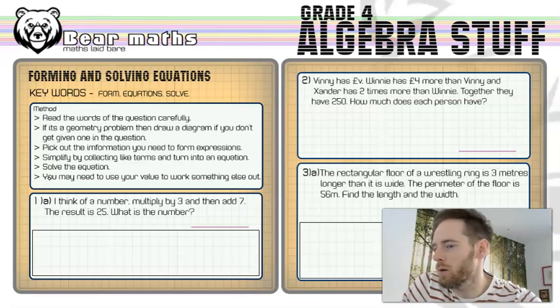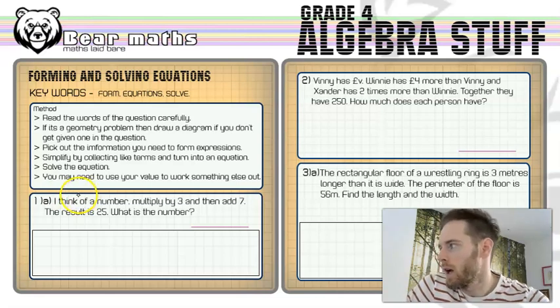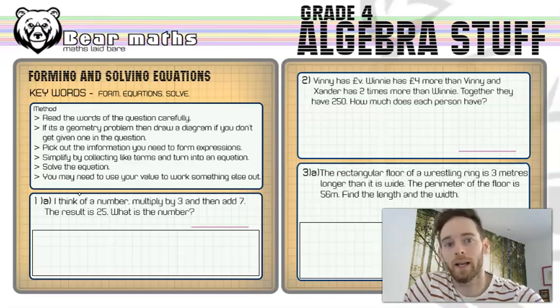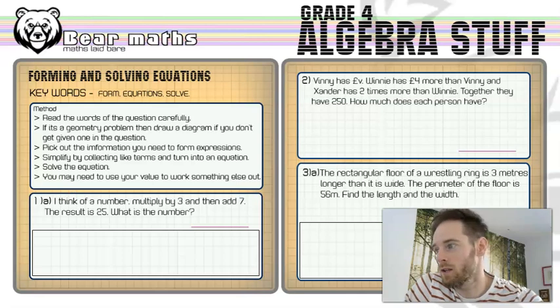So read the words of the question really carefully. If it's a geometry problem, then draw a diagram if you don't get given one in the question. Pick out the information you need to form the expressions. Simplify by collecting like terms and turn into an equation. Solve the equation and you may need to use your value to work something else out afterwards as well. There's loads of things to think about here and loads of things going on, but we can start off relatively simple and it's kind of logical.